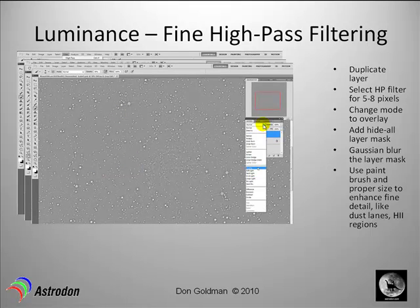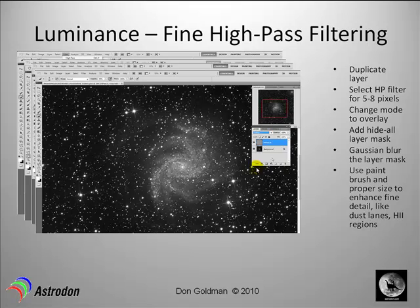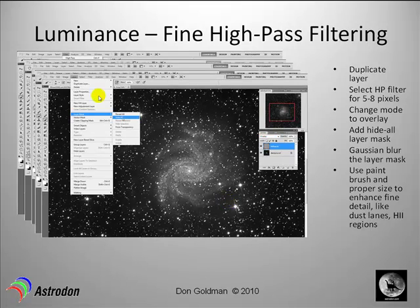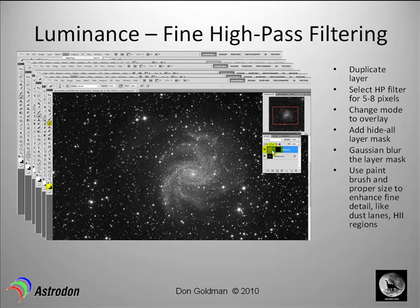Change the blending mode from Normal to Overlay. What you end up with is an image where everything — all the stars and all the detail — is high pass filtered at this 8-pixel fine level, which you don't want. So add a layer mask by going to Layers > Layer Mask > Hide All, click OK, and a black box appears. You'll notice the detail we just got has disappeared — we've essentially masked it out.